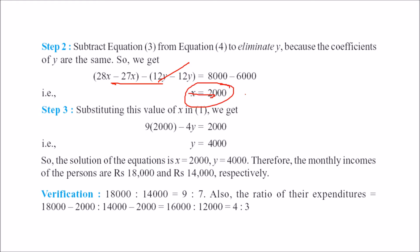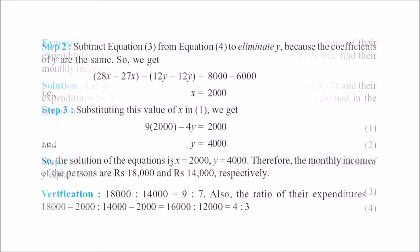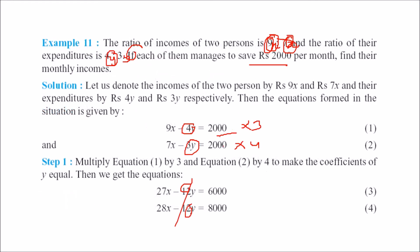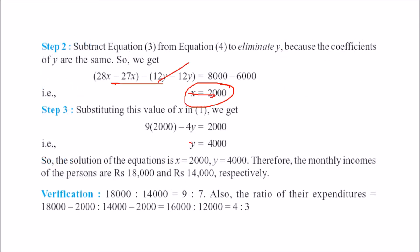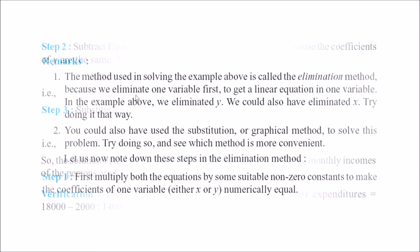Once x is found, substitute it into either equation to get the value of y. You can verify: with 9x, 7x and x, y values obtained, compute 4y and 3y, and the differences will both equal 2000.